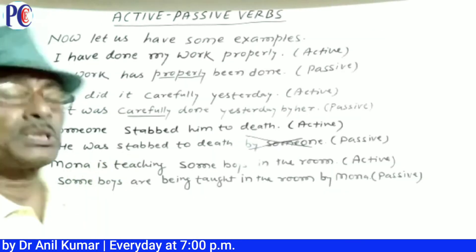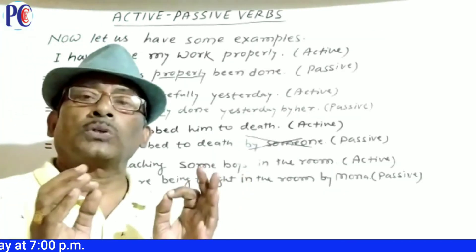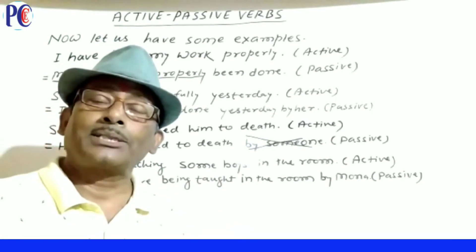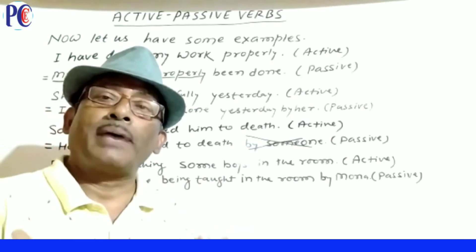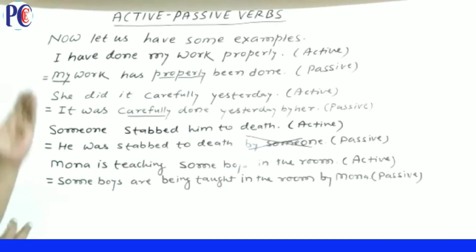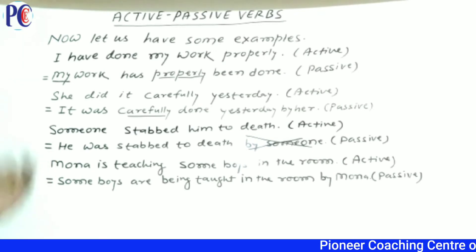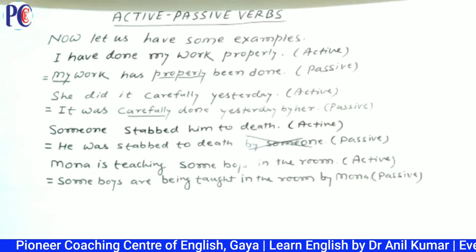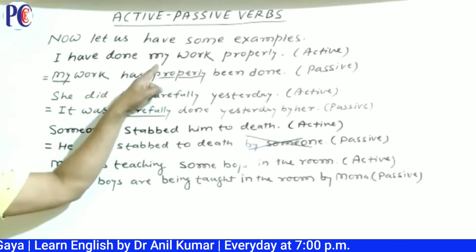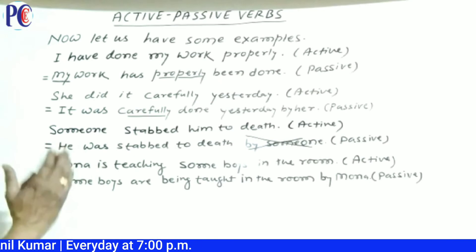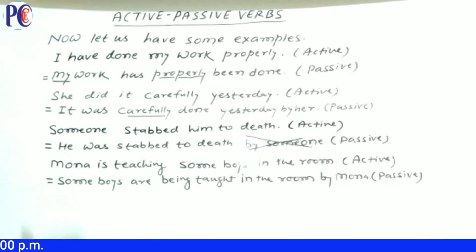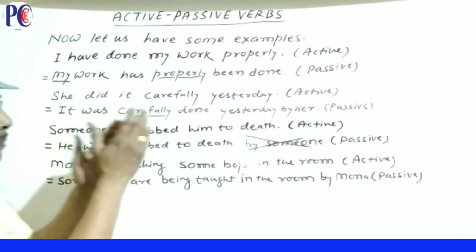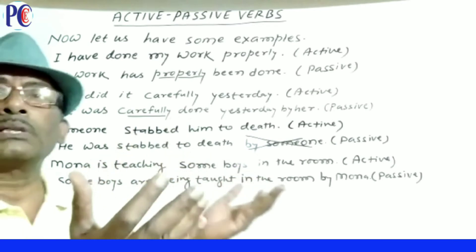Now let us have some examples to show how we can change an active sentence into a passive one. First example: 'I have done my work properly' — passive: 'My work has properly been done.' यहाँ 'by me' की जरूरत नहीं होगी, क्योंकि case possession से इस्पष्ट हो जा रहा है कि यह काम 'I' के द्वारा हुआ है।